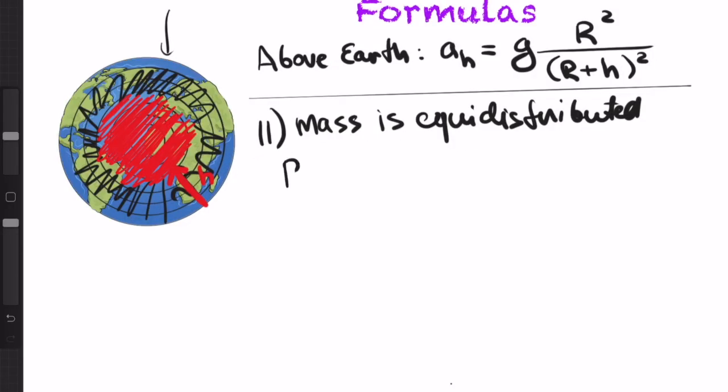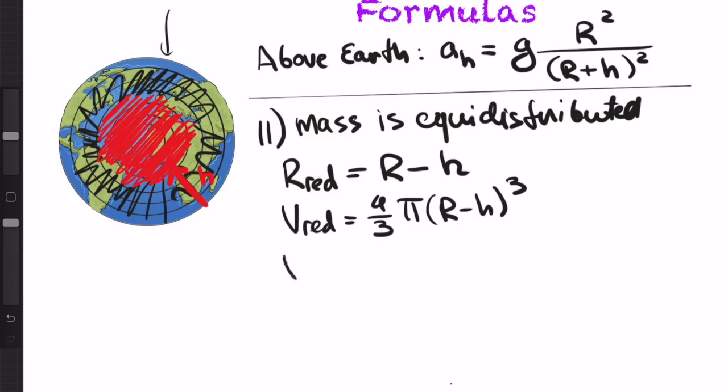So now, what is the radius of this red sphere inside Earth? Well, it is simply r minus h. So the volume of this red sphere is 4 thirds pi r minus h cubed. And I'm sure you know this formula for the sphere. But at the surface, it was 4 thirds pi r cubed. So now, as I've stated before, the attraction of this black point here is only coming from this red sphere.